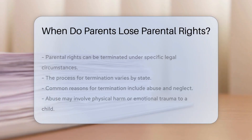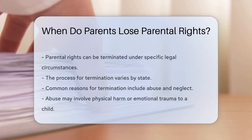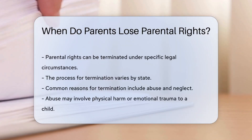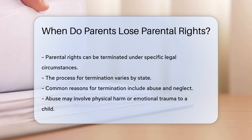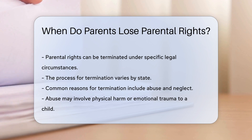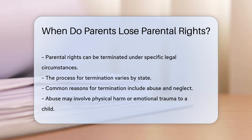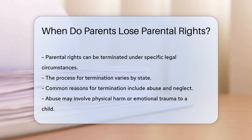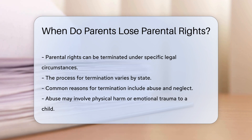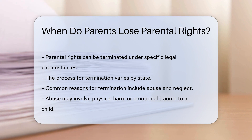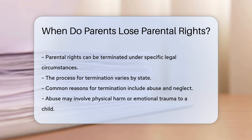Parental rights can be terminated under specific circumstances defined by law. The process varies by state, but common reasons include abuse or neglect. Abuse can involve physical harm or emotional trauma inflicted on a child. Neglect refers to failing to provide essential care, such as food, shelter, and medical attention.